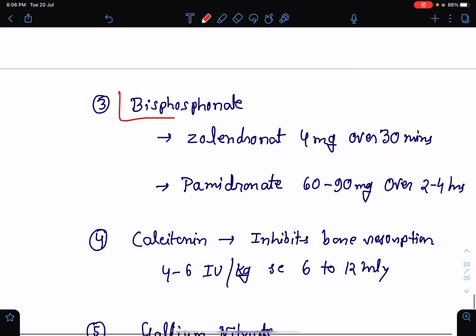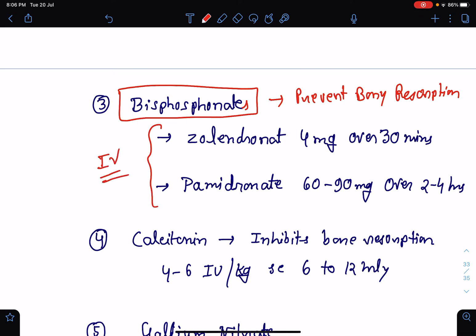Next very important drug is bisphosphonates. Bisphosphonates will prevent the bone resorption of calcium. We usually use IV or intravenous bisphosphonates in acute cases. We can use zoledronate, 4 mg of zoledronate to be infused over 30 minutes. Pamidronate we can use at a dose of 60 to 90 mg over 2 to 4 hours. It is contraindicated in case of renal insufficiency.